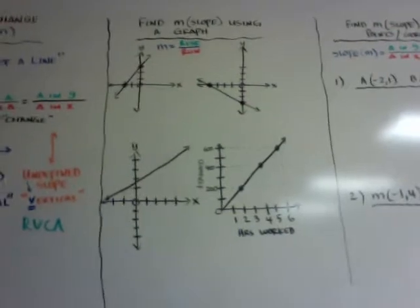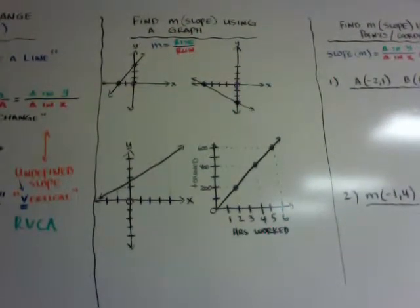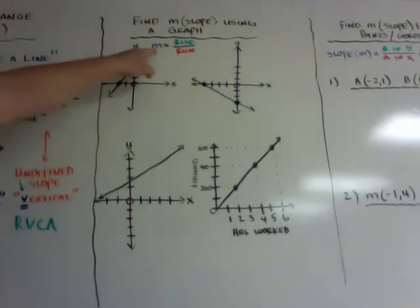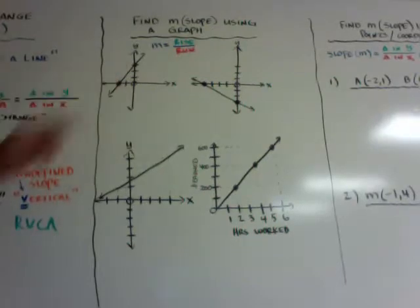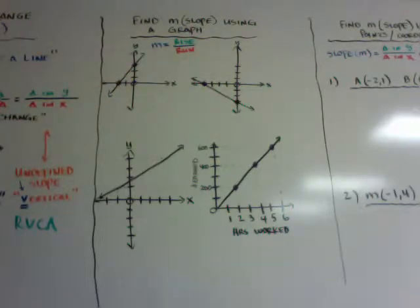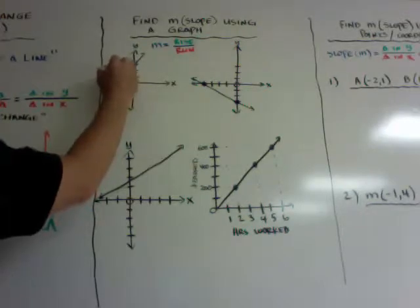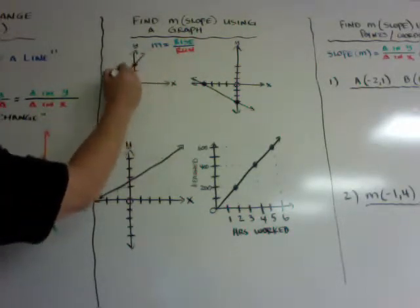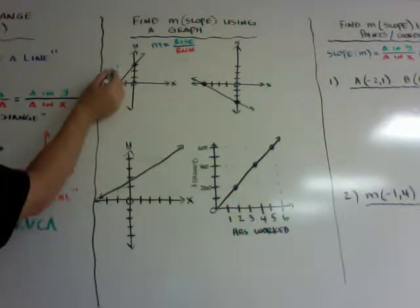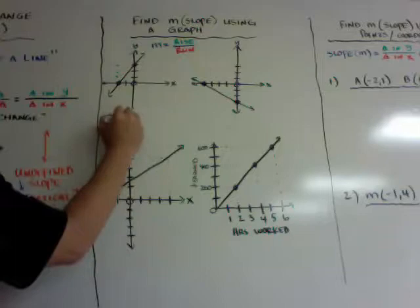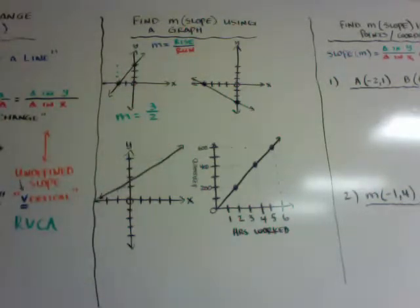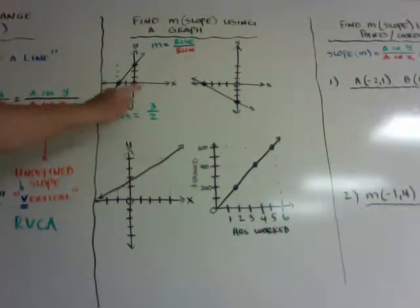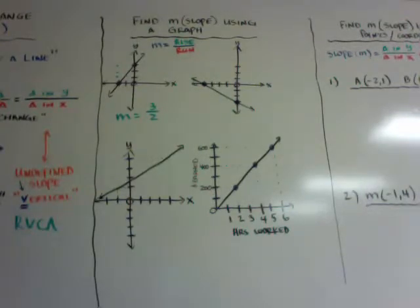Here's one part: finding slope using graphs. I have four different examples. Remember, slope is rise over run. If I have two points here, I go from left to right — from the left point to the right point. I rise 1, 2, 3 — I went up three points — and then run 1, 2. So my slope is rise 3, run 2, or 3 over 2. Leave it as an improper fraction — do not change it to a mixed number or a decimal. Leave it as a simplified improper fraction.